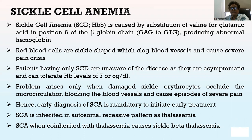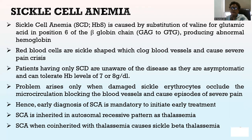Sickle cell anemia, SCD or HbS, is caused by a substitution of valine for glutamic acid at position six of the beta-globin chain (GAG to GTG), producing an abnormal hemoglobin. Red blood cells become sickle-shaped, clogging blood vessels and causing severe pain crisis. Patients with SCD are often asymptomatic and unaware of the disease, tolerating hemoglobin levels of 7–8 g/dL. Problems arise only when damaged sickled erythrocytes occlude the microcirculation, blocking blood vessels and causing episodes of severe pain. Hence, early diagnosis of SCA is mandatory to initiate early treatment. SCA is inherited in an autosomal recessive pattern; when co-inherited with thalassemia, it causes sickle beta-thalassemia.